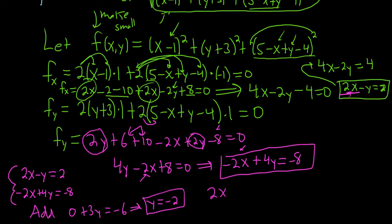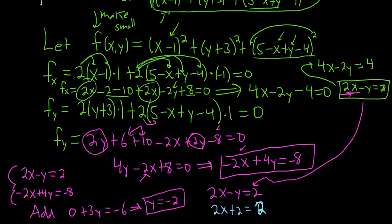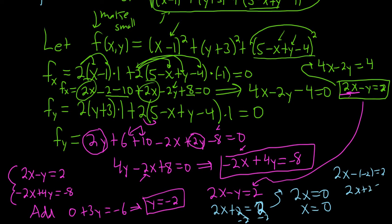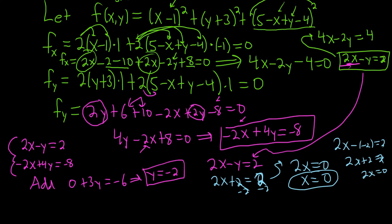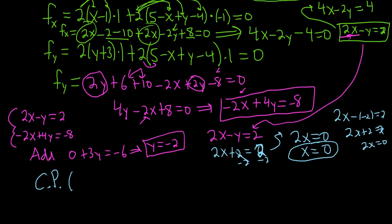Plugging y equals negative 2 into the first equation: 2x minus negative 2 equals 2, so 2x plus 2 equals 2, giving 2x equals 0, so x equals 0. Our critical point is x equals 0, y equals negative 2.